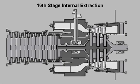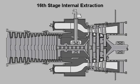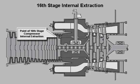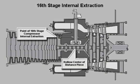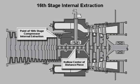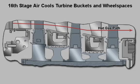During normal operation of the gas turbine, a portion of the compressor discharge air is internally extracted through the wheel space that exists between the 16th and 17th compressor stages. This air passes through the hollow centers of the distance piece and the turbine rotor.